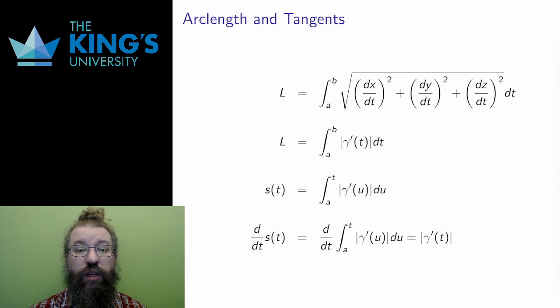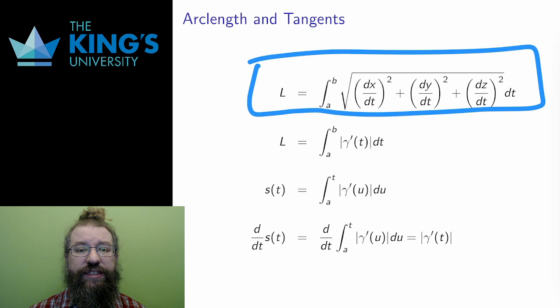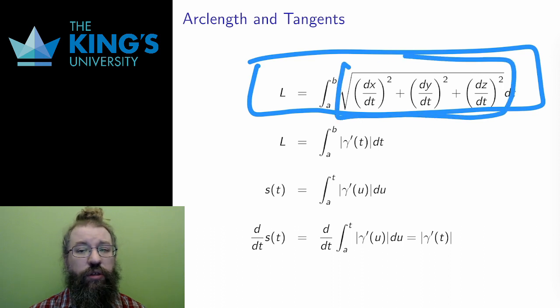Let me finish this video with an important observation about arc length. Here again is the arc length integral. The term inside the integral is precisely the length of the tangent. The tangent has components which are the derivatives, and the length squared of those components and taking the square root gives the length of the tangent vector.